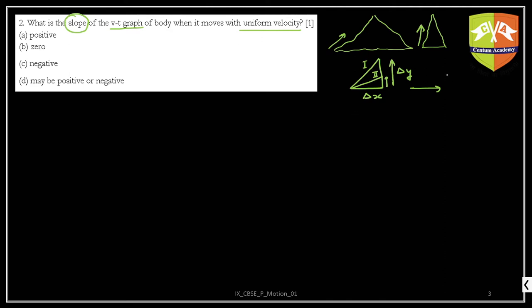So this is how we define slope — change in y divided by change in x. Whatever quantities you are taking in the x direction and y direction, that is how you define slope. So the slope of a v-t graph depends on what x and y represent in that graph.